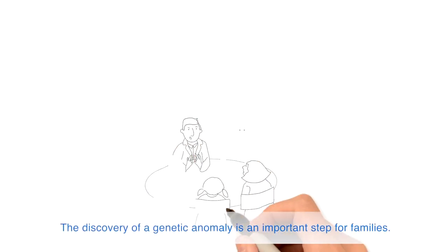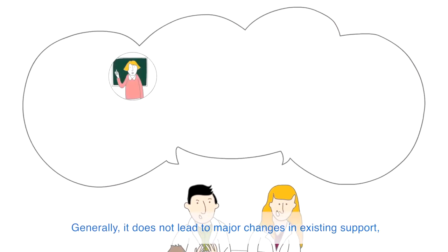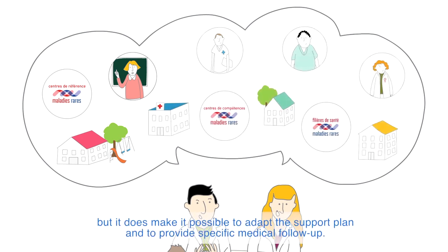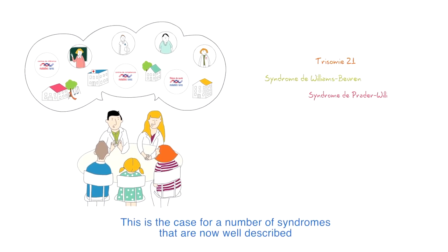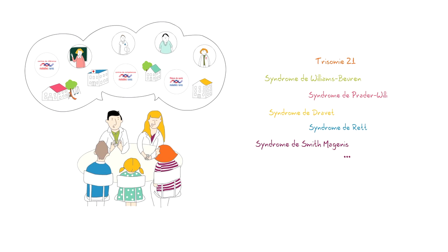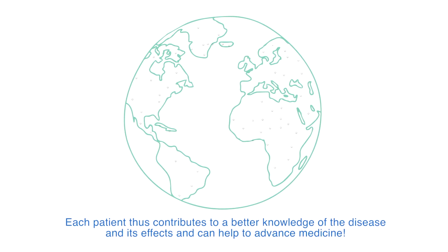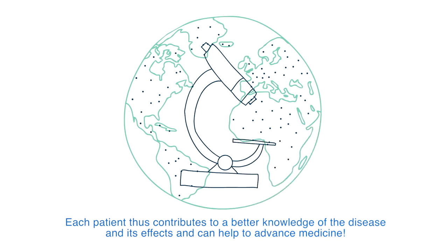The discovery of a genetic anomaly is an important step for families. Generally, it does not lead to major changes in existing support, but it does make it possible to adapt the support plan and to provide specific medical follow-up. This is the case for a number of syndromes that are now well described and for which there are specific care recommendations, providing a real improvement in patient health and quality of life. Each patient thus contributes to a better knowledge of the disease and its effects and can help to advance medicine.